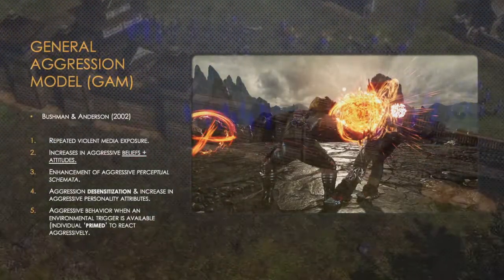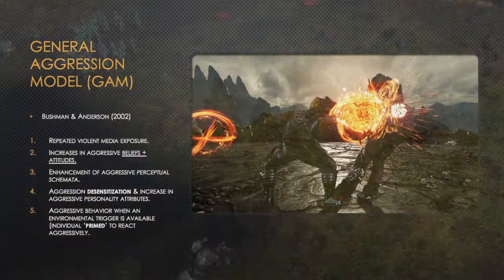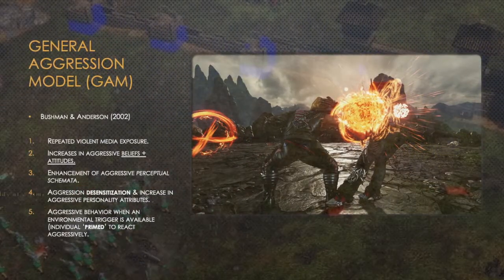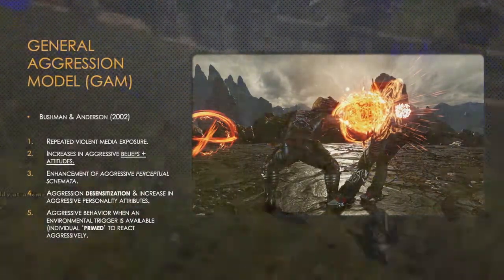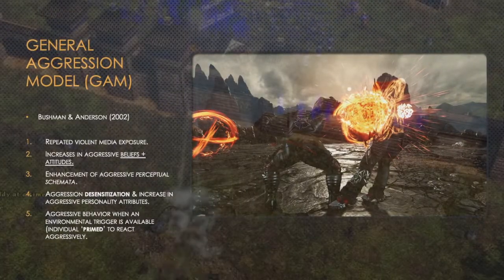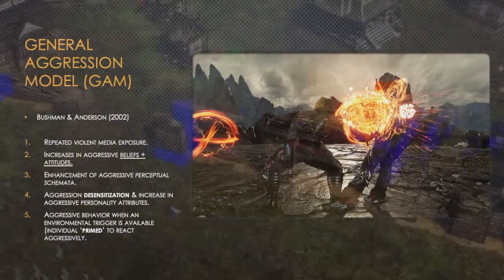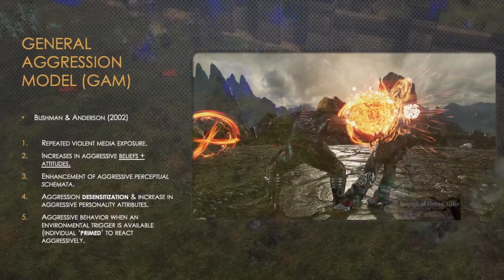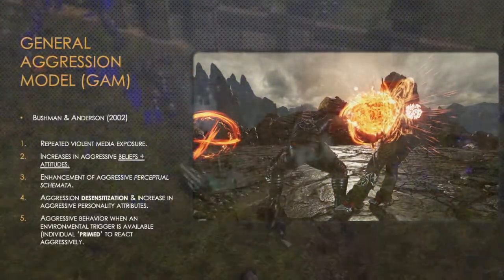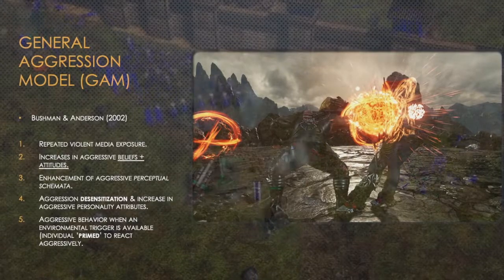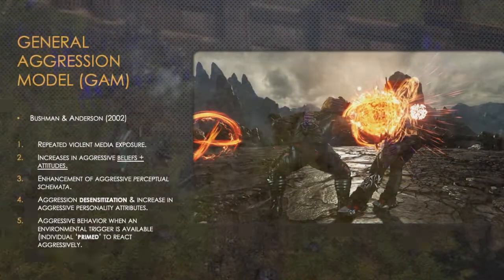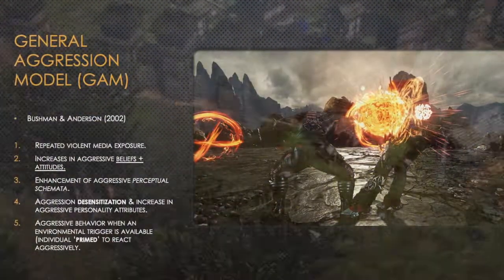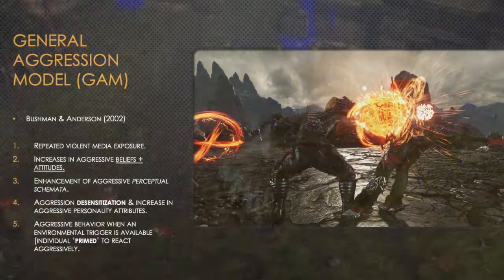The general aggression model, or GAM, was created by Bushman and Anderson in 2002. It involved a series of stages, such as repeated violent media exposure, increases in aggressive beliefs and attitudes, the enhancement of aggressive perceptual schemata, aggressive desensitisation, increases in aggressive personality attributes, and finally aggressive behaviour when an environmental trigger is available.